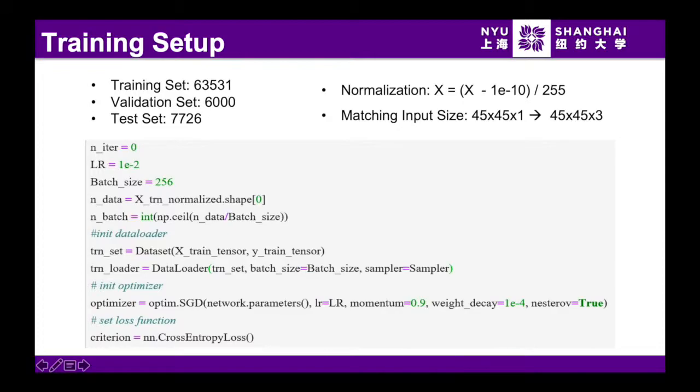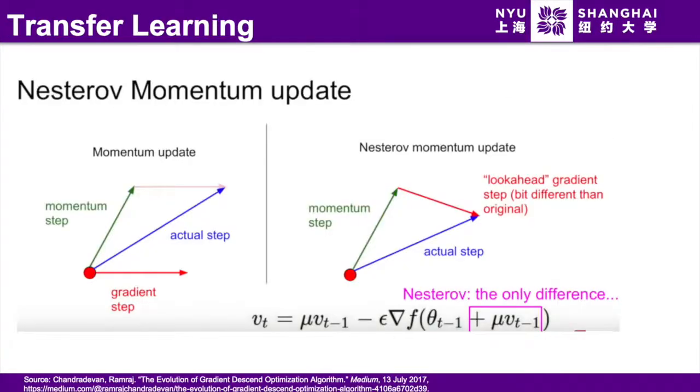We use cross-entropy loss function. The Nesterov momentum update is an accelerated version of the classical momentum method. It is basically first taking a momentum step, then making a correction by measuring the gradient. When the learning rate is relatively large, Nesterov allows larger decay rate than momentum method while preventing oscillations.